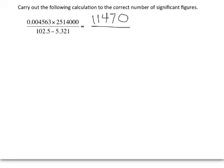I like to rewrite it when I do addition and subtraction. So I'm going to write this as 102.5 minus 5.321. So this makes it easier to see. The number that has the least number of decimal places is the first number. I only know this one to the tenths place, so that means my result can only be known to the tenths place.